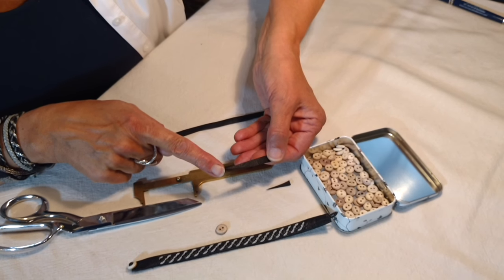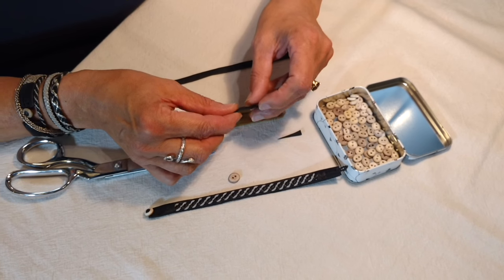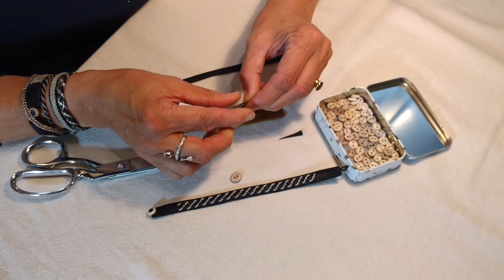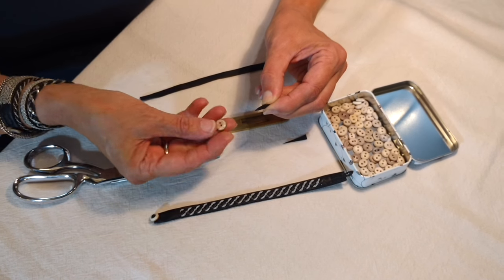The pointed part of this is what we'll use to feed up through our button. You'll take the two inch strip and fold it lengthwise so you have a nice point at the end.